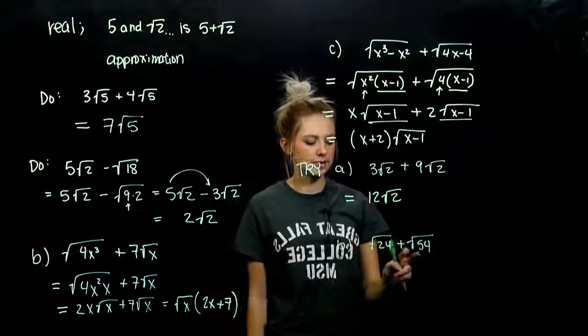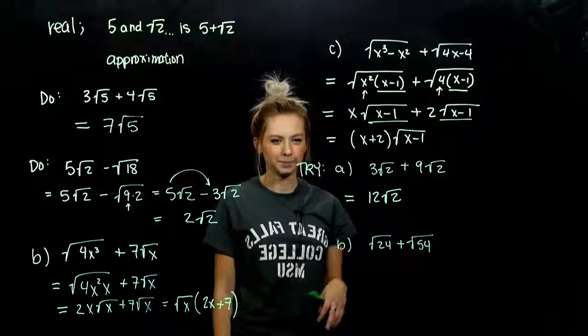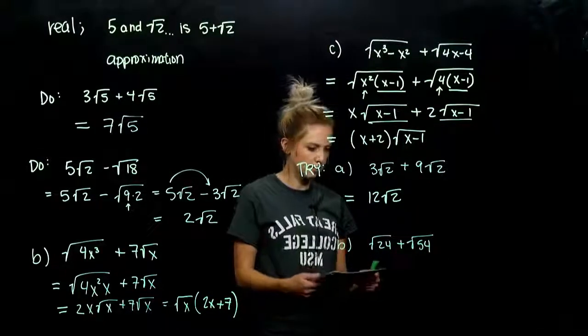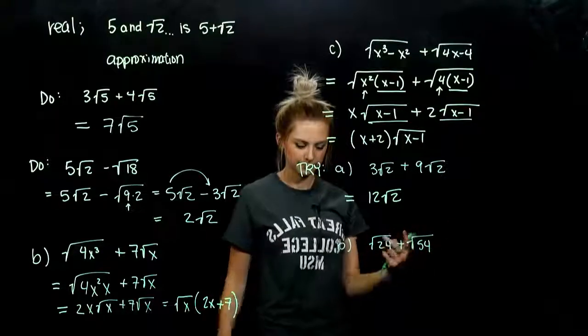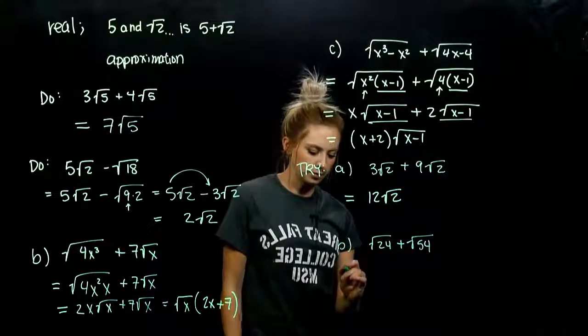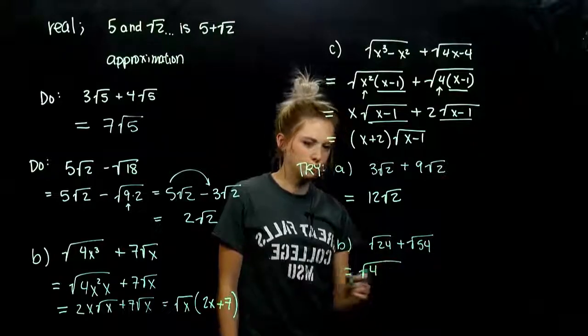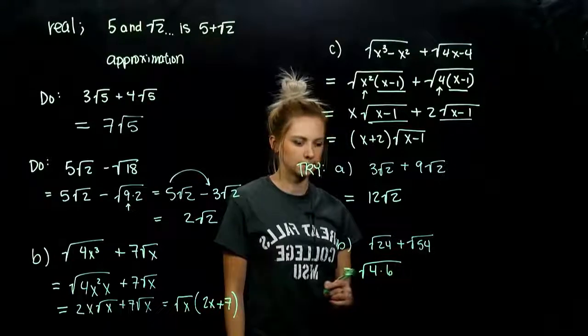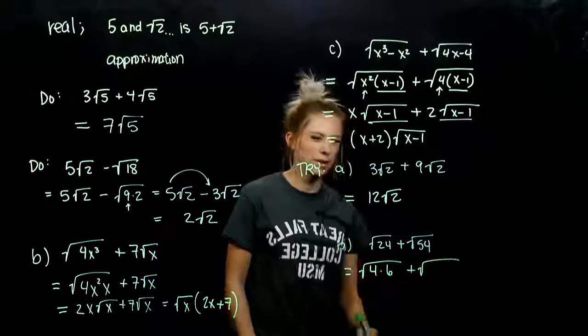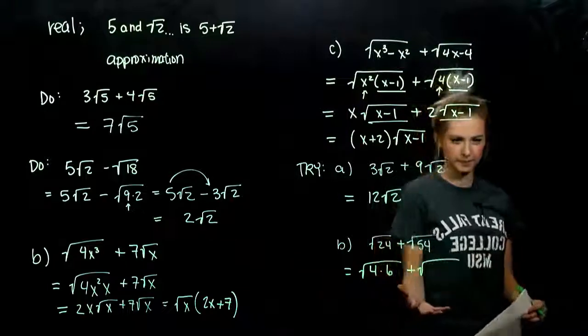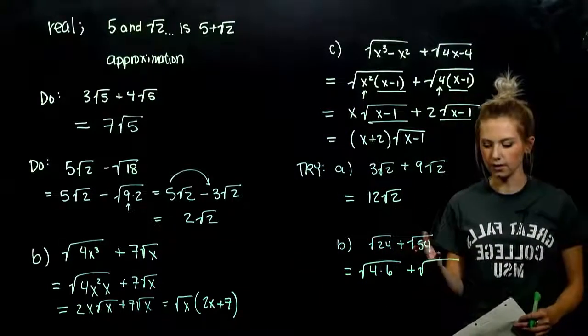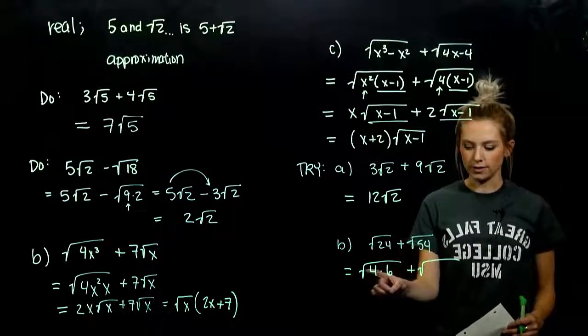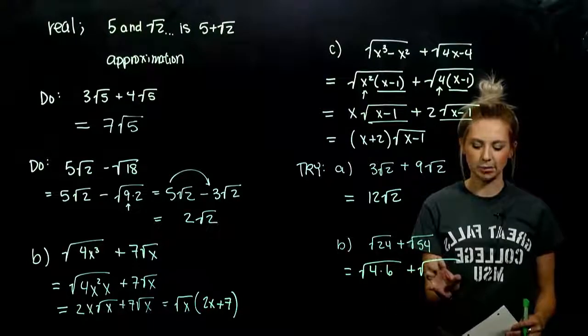But for part B, we aren't matching exactly underneath there right now. But how could we break up those numbers into perfect squares and then parts that are matching? So 24, the perfect square that we can take out of there is 4. So if I take 4 out of 24, I'm left with 6. And we can kind of cheat with these. Because if I am going to combine them together, I need to break up 54 into a factor that either has 4 or 6 down here.